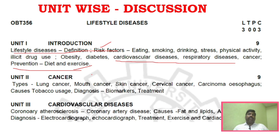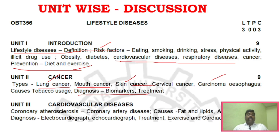In unit two, you can see different types of cancers. For example, lung cancer can be asked for 13 marks, mouth cancer can be asked for 13 marks, skin cancer, cervical cancer, etc. In the cancers section: lung cancer, skin cancer, carcinoma, sarcoma, and osteosarcoma are key areas. Similarly, the diagnosis of biomarkers and treatment for cancer is a very important question.